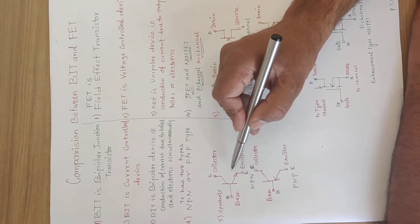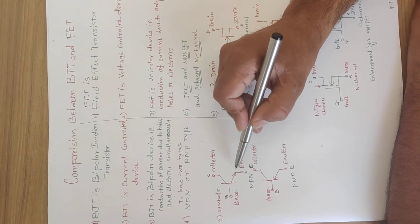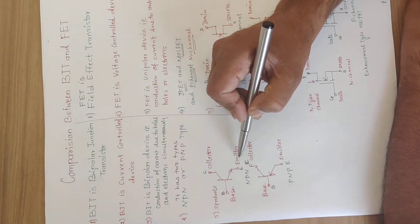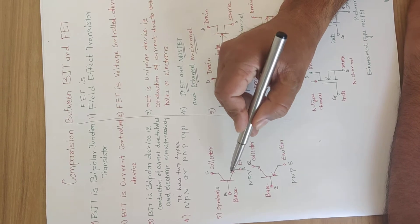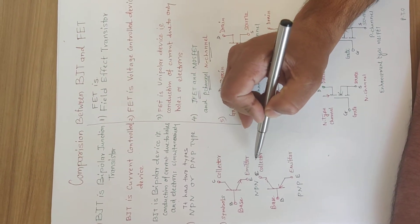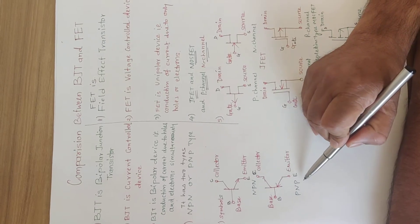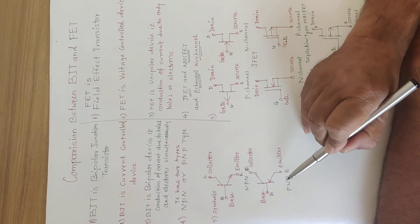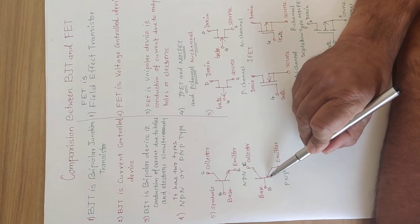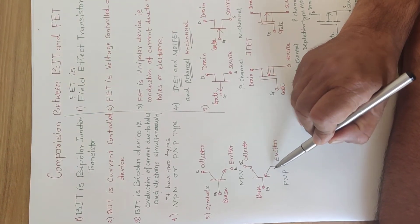Or we can say that in BJT, there is an arrow on emitter terminal which is pointing toward the base or going outward the base. This is NPN transistor, this is PNP transistor. Now look at this, the arrow is on the emitter but on the base side, going inside.